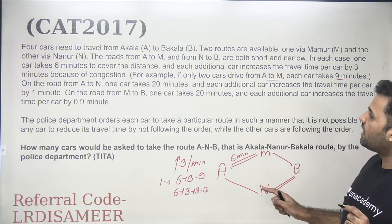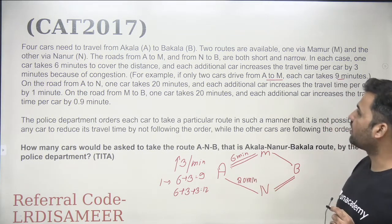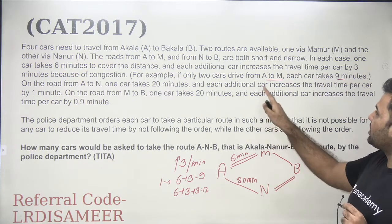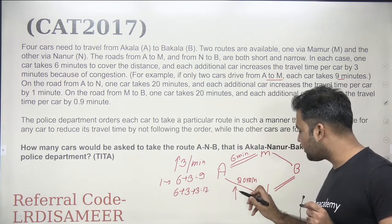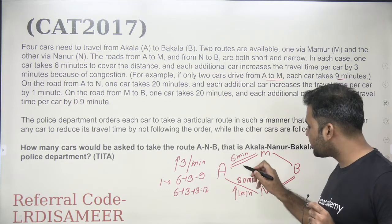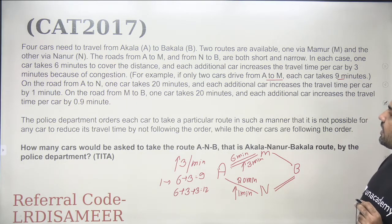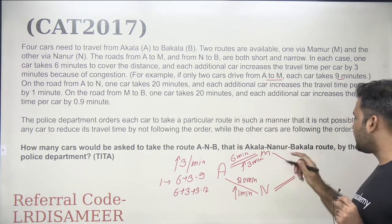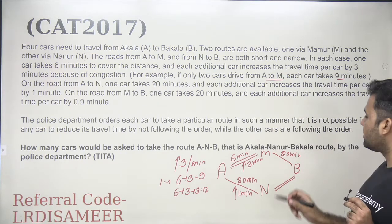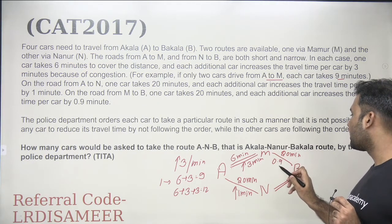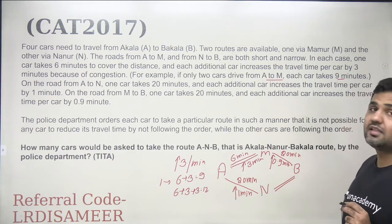On the road from A to N, the travel time for one car is 20 minutes, and each additional car increases the travel time by one minute. On the road from M to B, one car takes 20 minutes, and each additional car increases the travel time by 0.9 minutes.